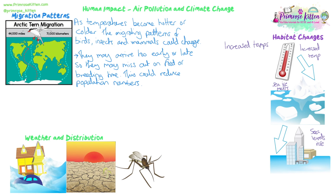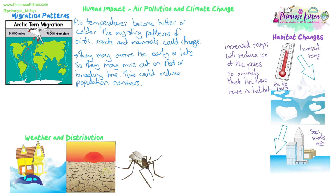Habitat changes are another impact. Increased temperatures reduce ice at the poles, meaning animals like polar bears, penguins, and seals that rely on that ice lose their habitat, reducing their population numbers. Melting ice also increases sea levels. Coastal habitats will be lost or reduced as they go underwater, taking away habitat that many organisms rely on.